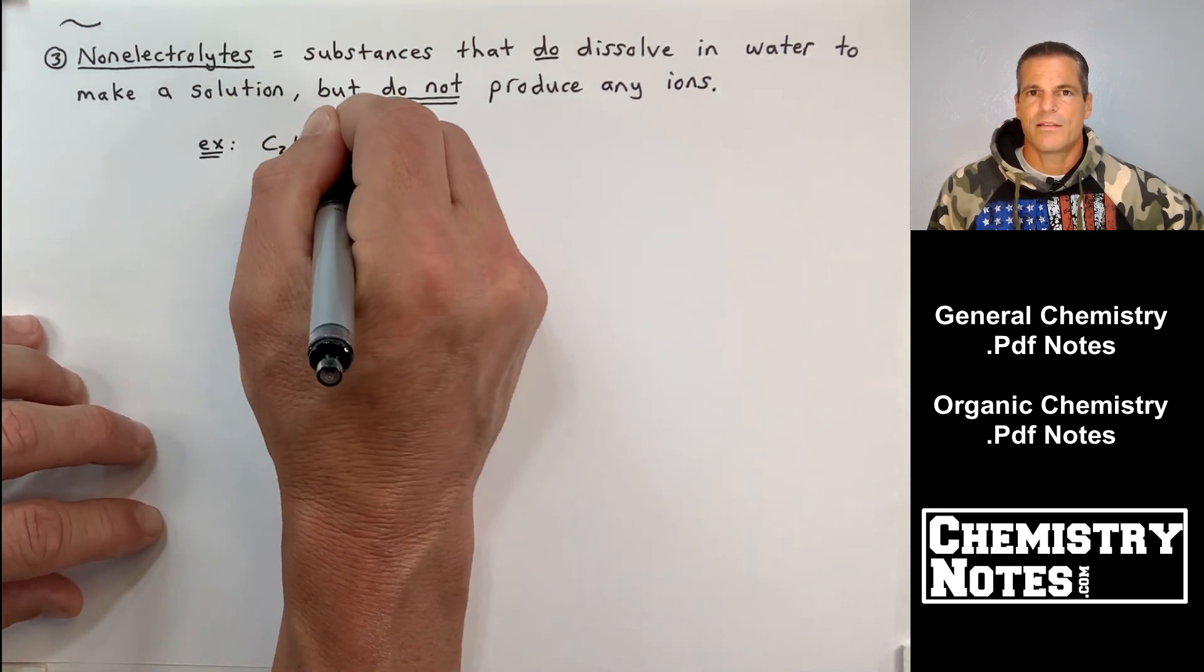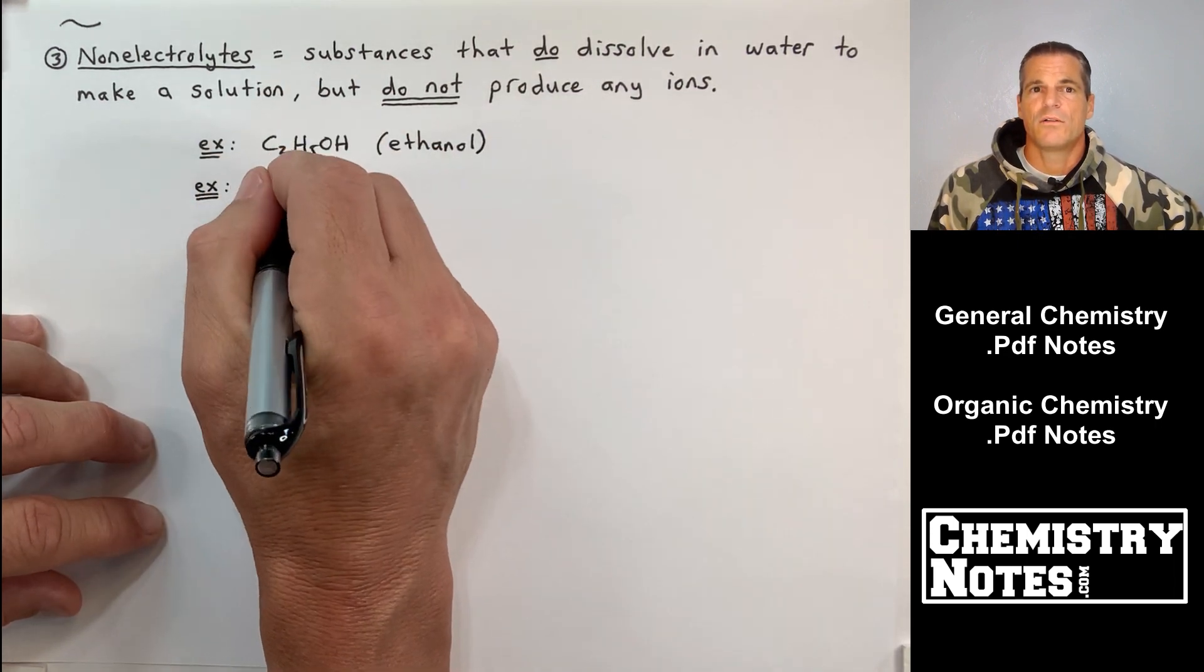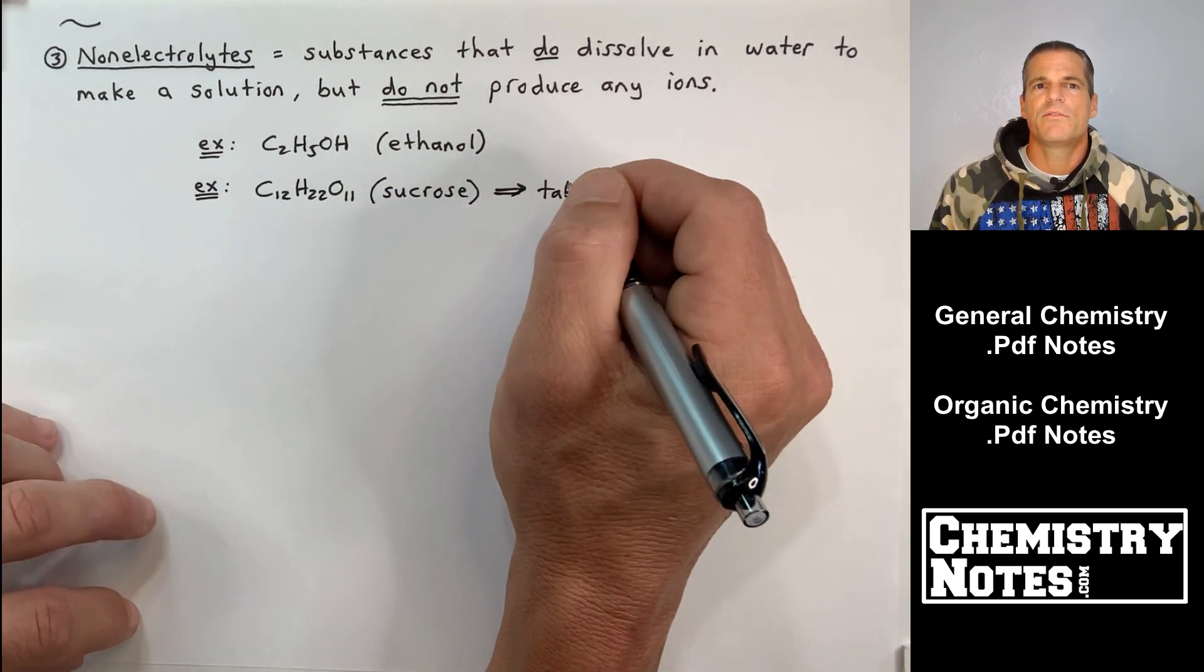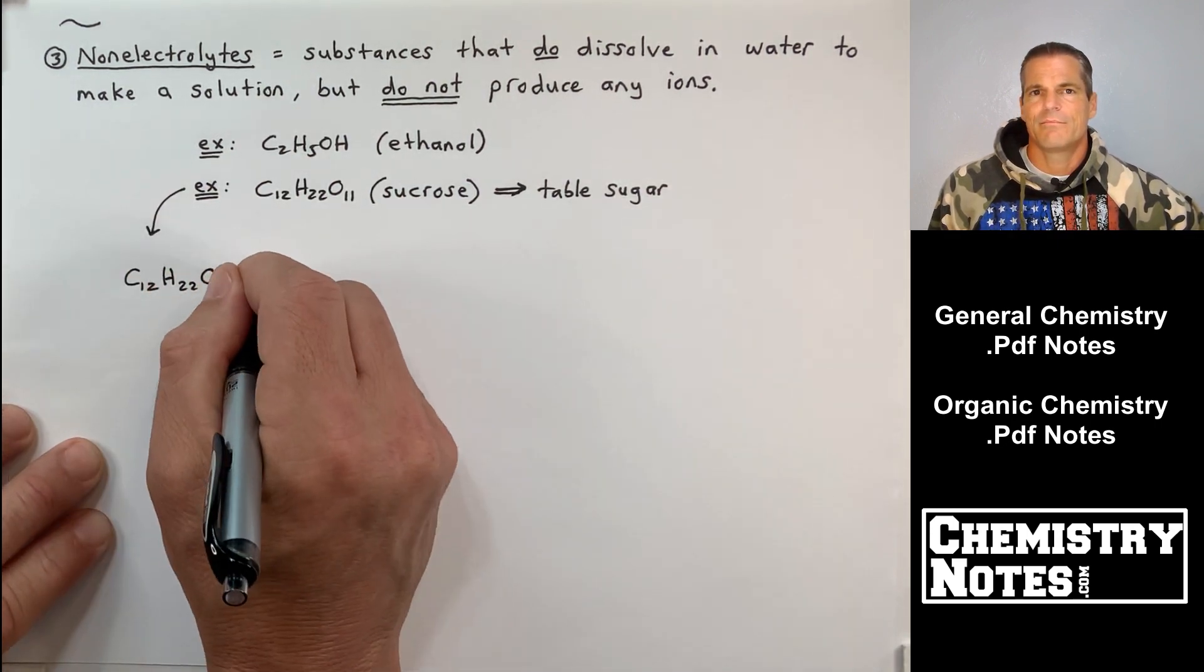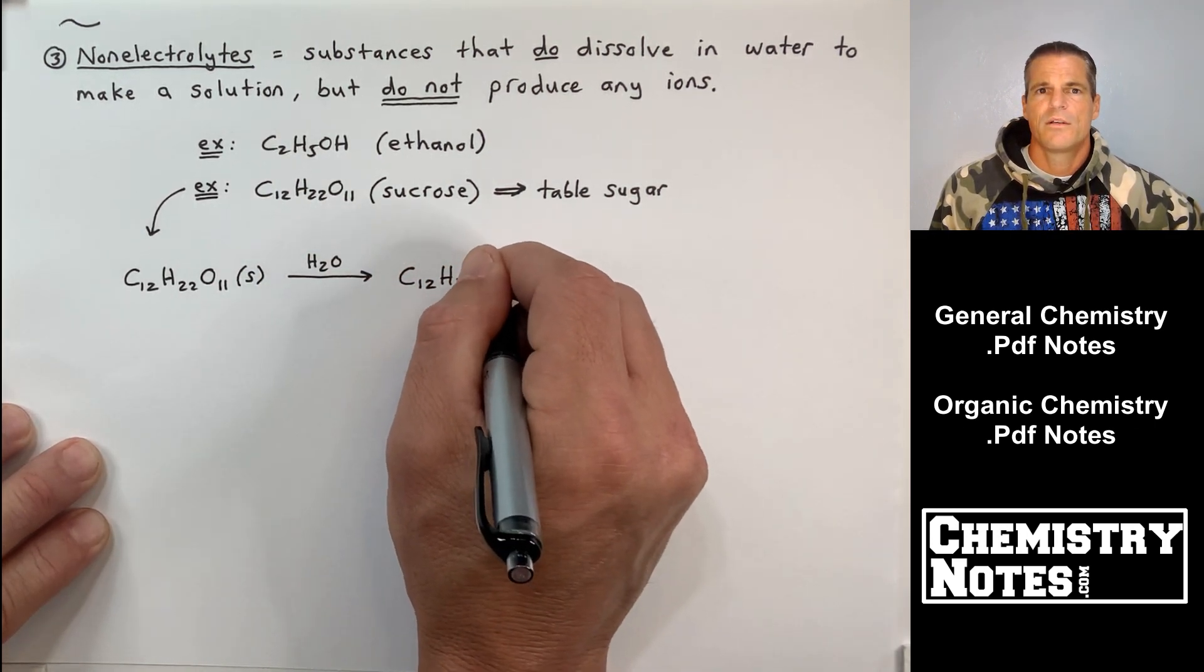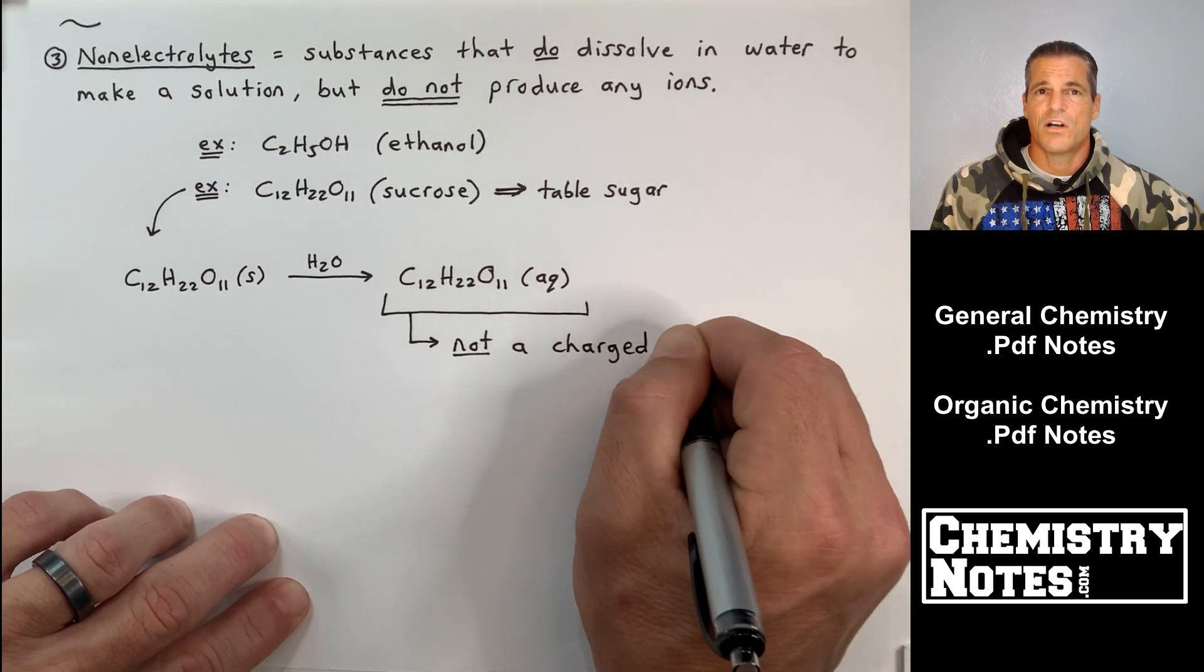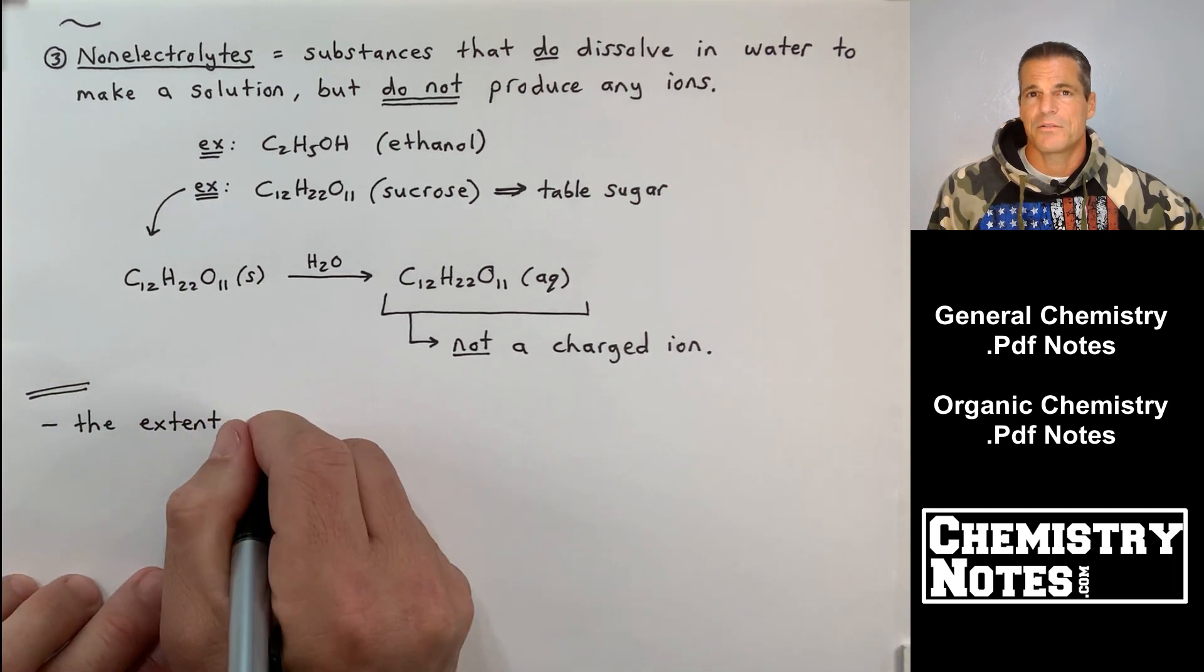So they cannot make that light bulb light up. Some examples, alcohol, ethanol, C2H5OH, and a popular example, sucrose or table sugar, C12H22O11. So if we had some sucrose solid, like you reached into the jar in the kitchen and you took some sugar and then you dissolved it in water, there's no ions dissolved in that water. The sucrose is dissolved, but you see by the simple equation there, it just goes from a solid to aqueous, and that's not a charged ion. That's a non-electrolyte.